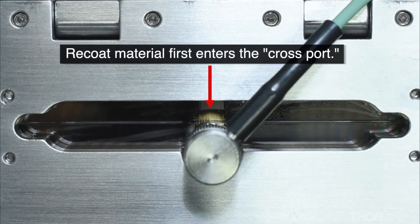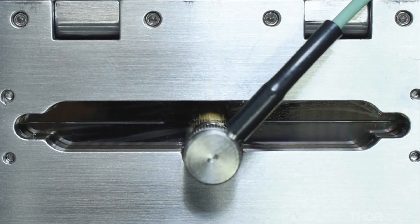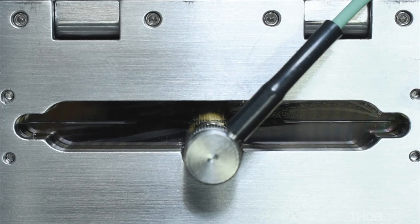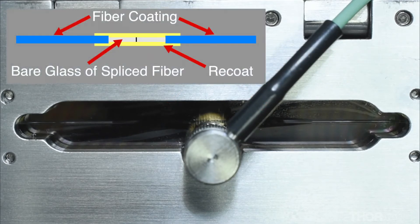Recoat material should be injected slowly allowing time for the material to flow along the channel. The length of the recoat should be such that it covers all the bare glass and overlaps the coating on either side of this region by a few millimeters.